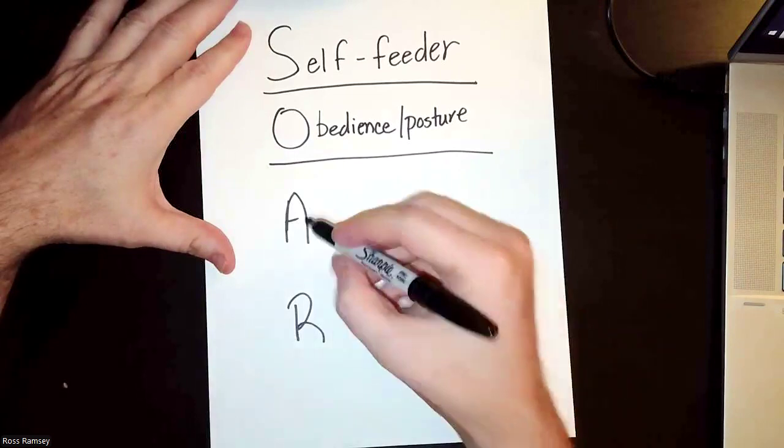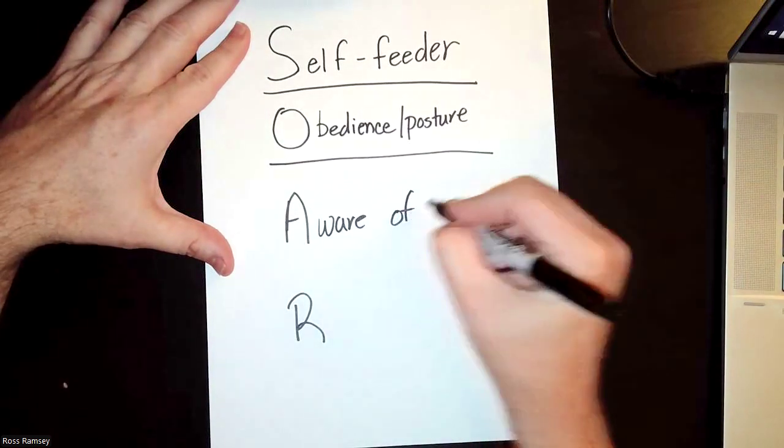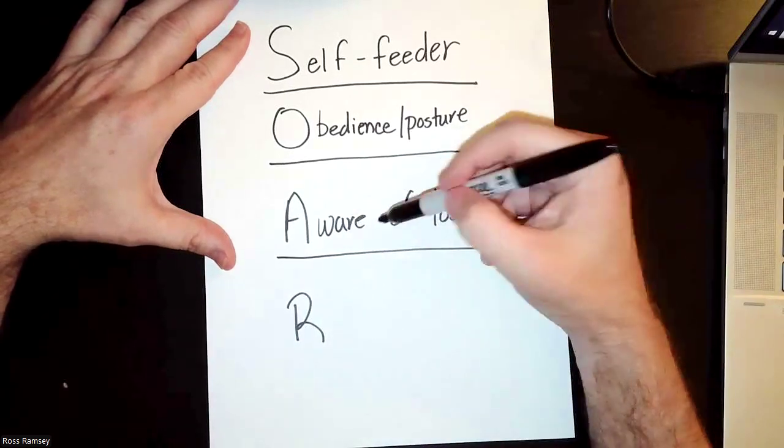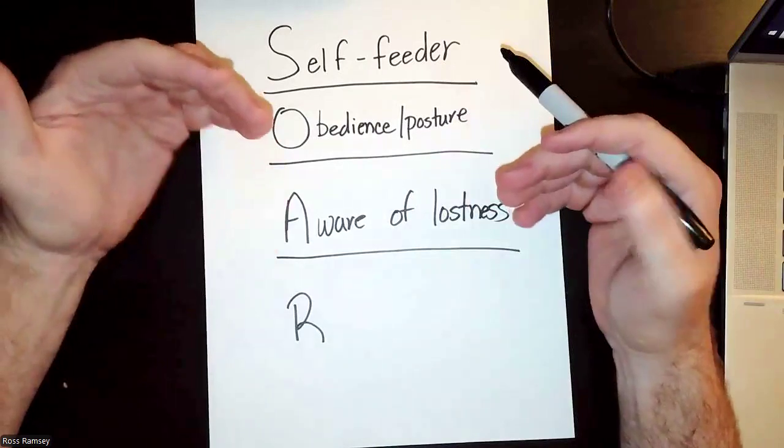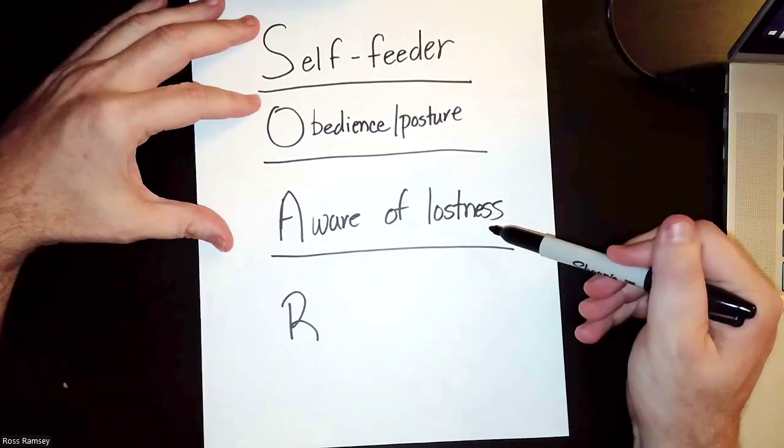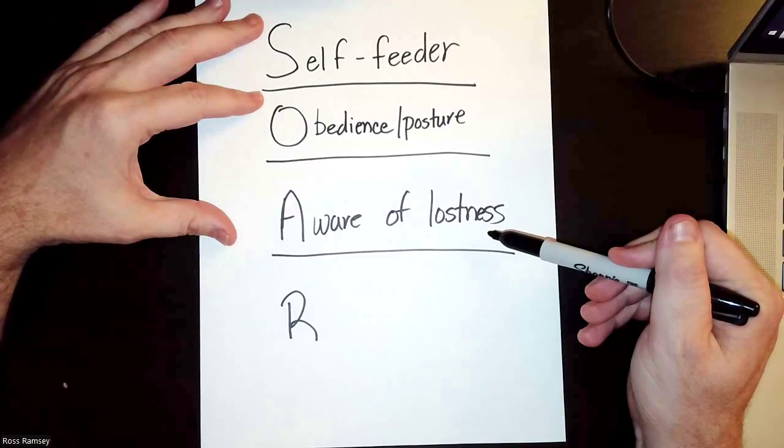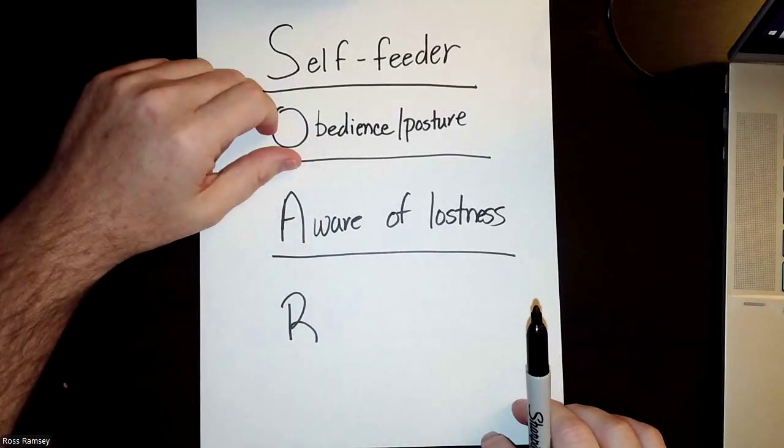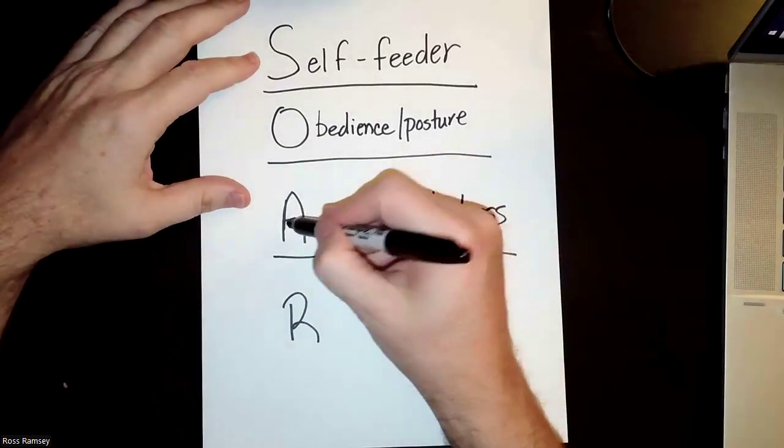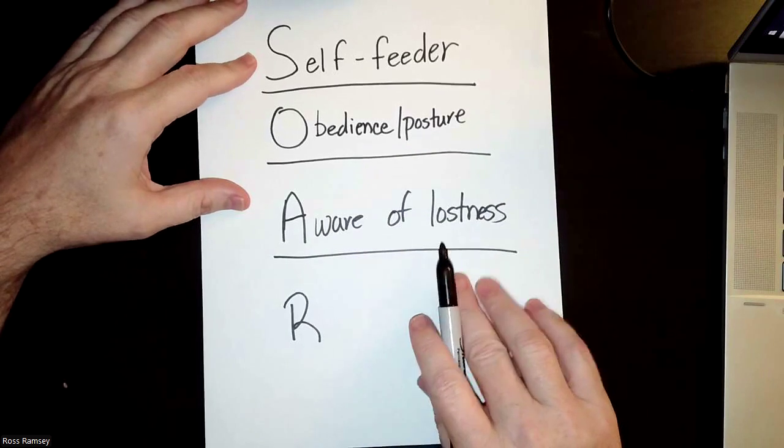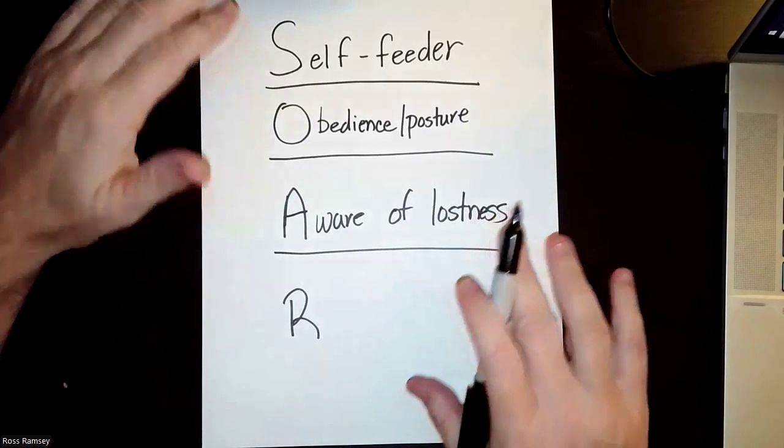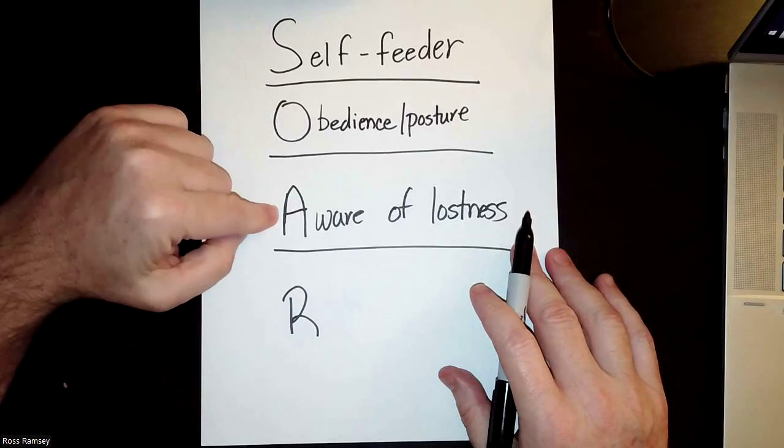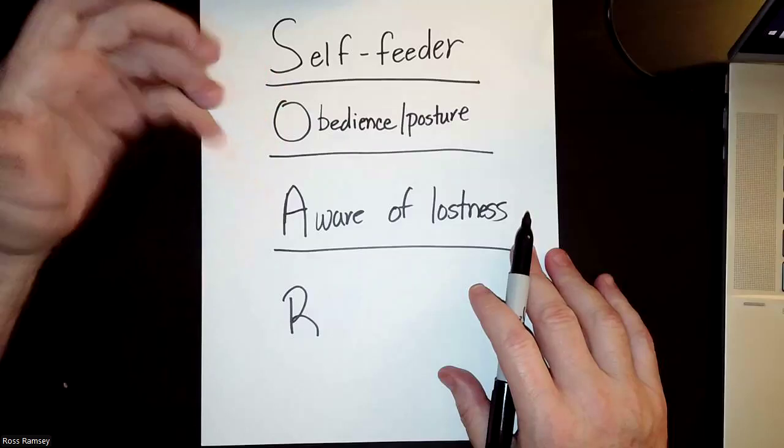The next one I love is 'aware of lostness.' In the last eight years, as we're taking people out into the harvest and teaching them to share the gospel, this is one of the unintended consequences. They go back into their spheres of influence—their neighbors, co-workers, their family—and they realize they're far from God. They become more aware, and that awareness of lostness around you is such a strong first step. It's on your radar now.